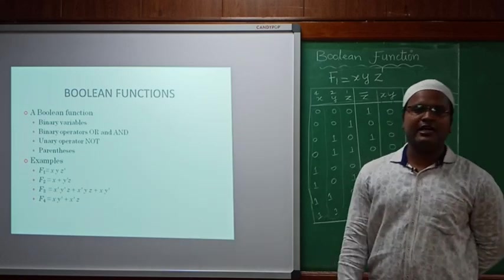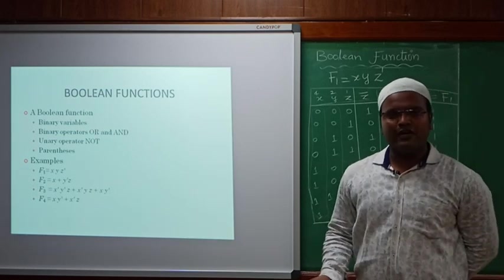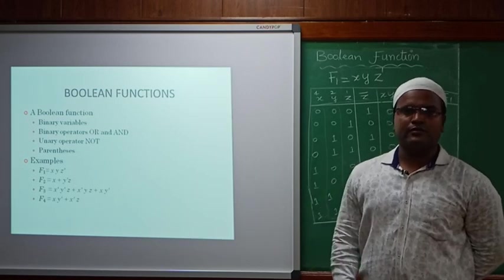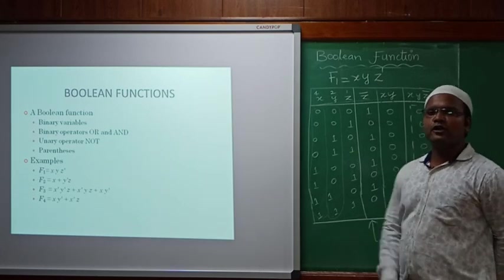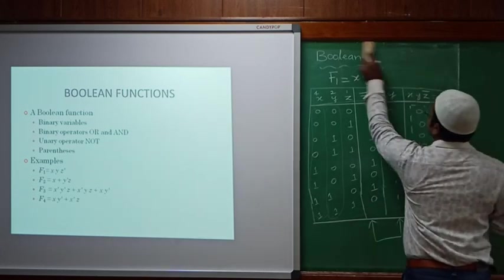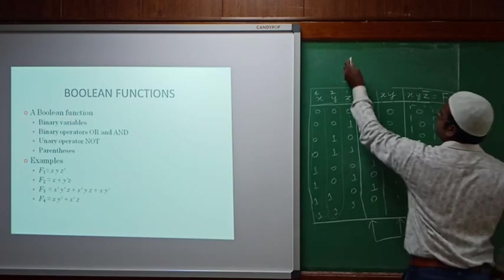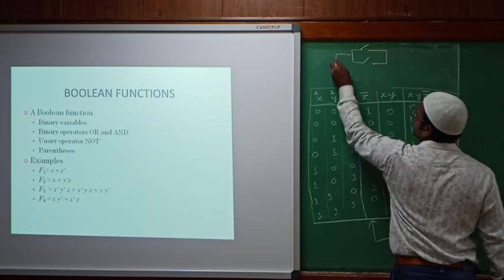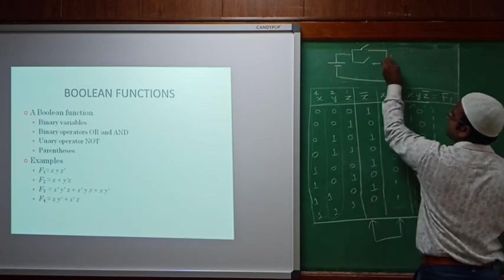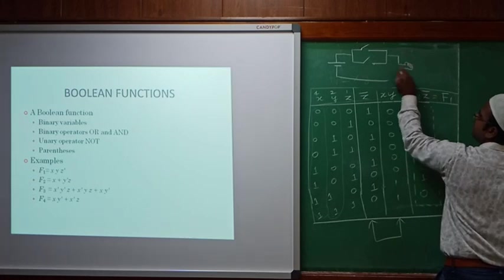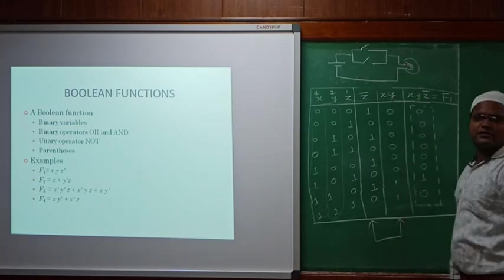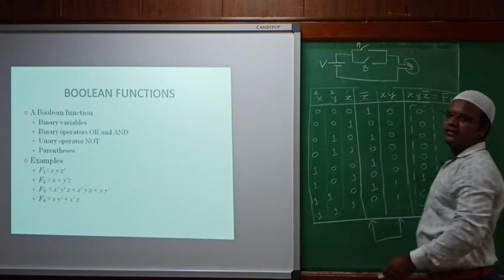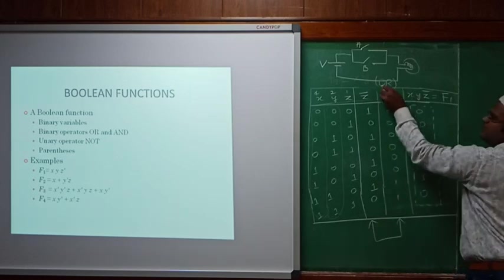For today's class, remember what we have learned: we discussed Boolean algebra, Boolean functions, and how AND, OR, and NOT gates work as switches. For the OR gate: we take two switches in parallel — if any one switch is high, the bulb glows, working as an OR gate.